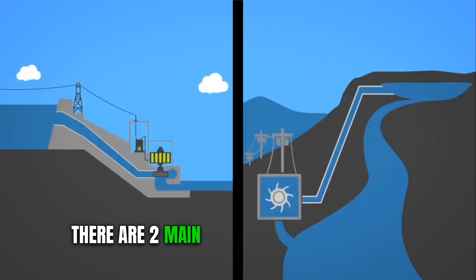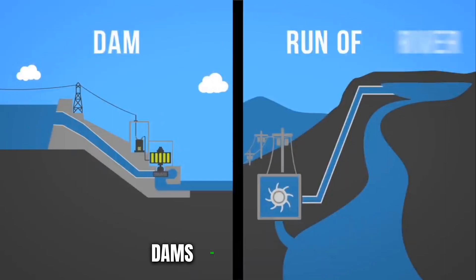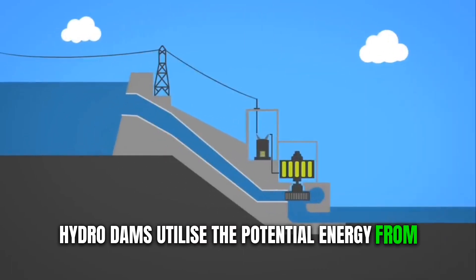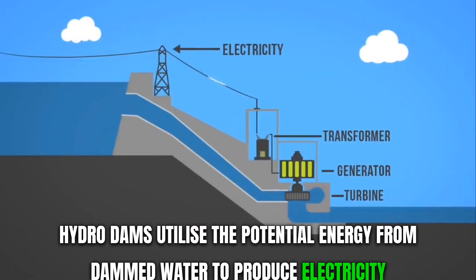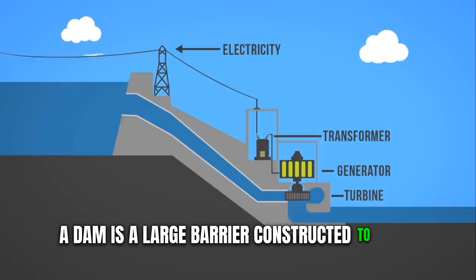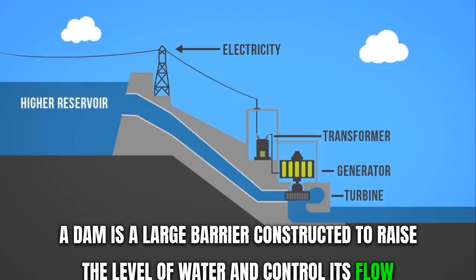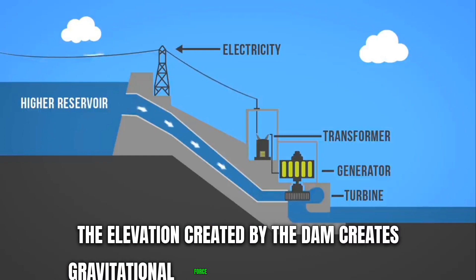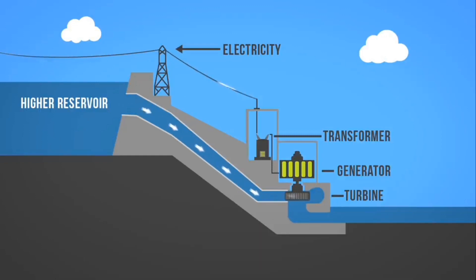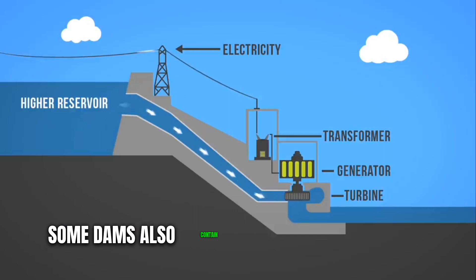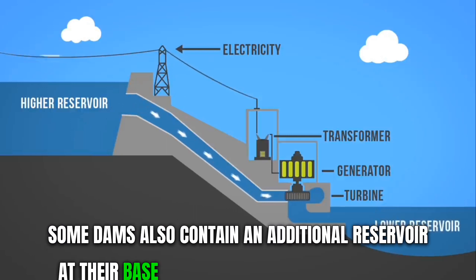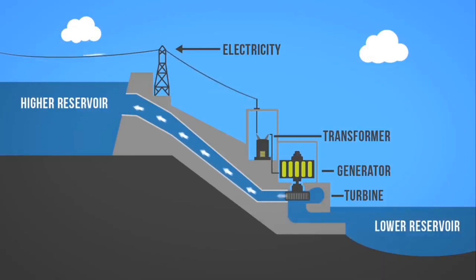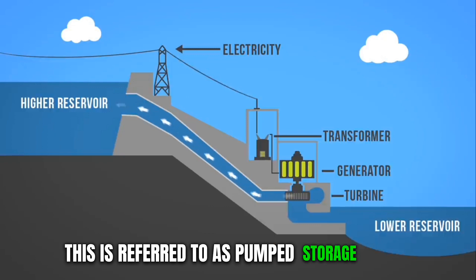There are two main types of hydroelectricity production: dams and run of river. Hydro dams utilize the potential energy from dammed water to produce electricity. A dam is a large barrier constructed to raise the level of water and control its flow. The elevation created by the dam creates gravitational force for turning the turbine when water is released. Some dams also contain an additional reservoir at their base where water is stored to be pumped to the higher reservoir for release when electricity is in demand. This is referred to as pumped storage hydro.